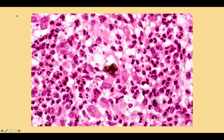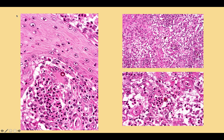In this field we can see the typical pigmented sclerotic bodies. These are fungal bodies which divide by septation. Chromoblastomycosis does not form buds, as is typically seen in pheohyphomycosis. This is another example again showing abscess formation with granulomatous inflammation and small numbers of sclerotic bodies.